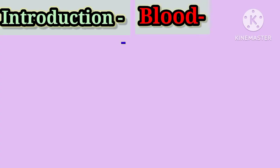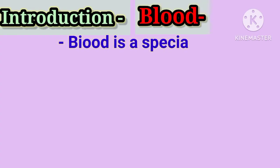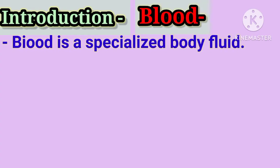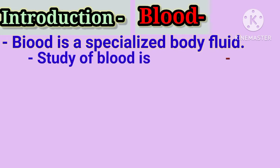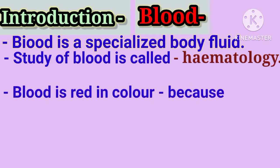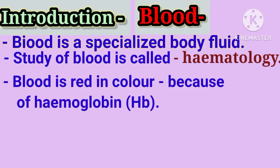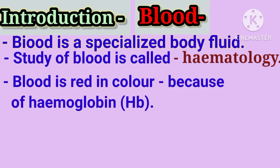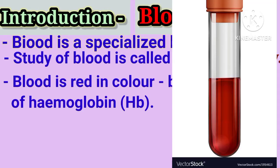First, we see the introduction. We see first information of blood. Blood is a specialized body fluid; the study of blood is called hematology. Blood is red in color because of hemoglobin, and that hemoglobin is present inside the red blood cells, which are present inside the blood — so blood is red in color.